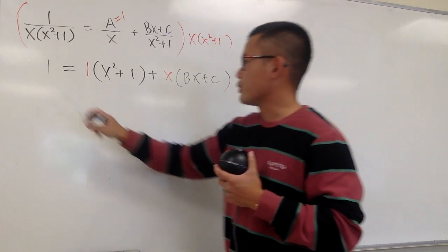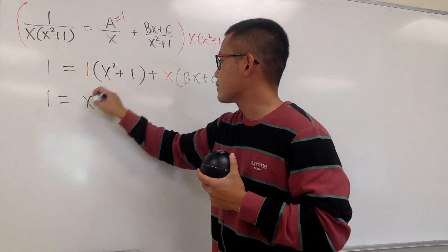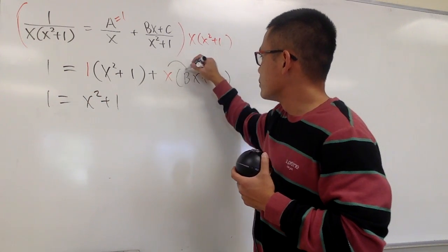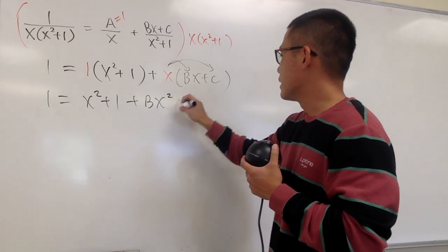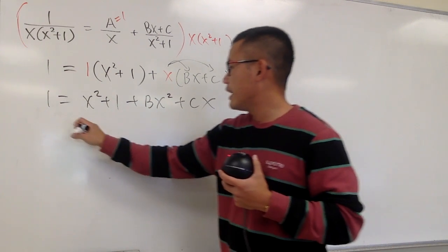And, just multiply this out real quick, this is 1 equals to, this is just x squared plus 1, and, of course, do this. So, you see, plus bx squared plus cx, and, as we know,